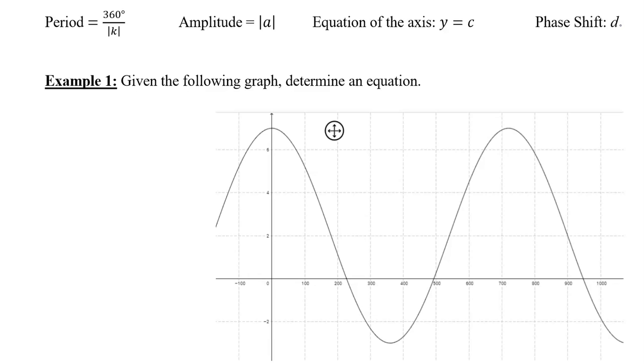So we're going to use these to determine the equation for the following graph. The first thing we should note here is if we're going from a maximum to a maximum, that here is 720 degrees. So we could say the period is 720 degrees. And if the period is 720 degrees, and we know that the period is 360 over k, that means that k is 360 over the period. So the k value in this case is 360 over 720, which is one half.